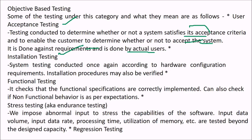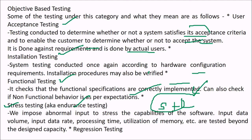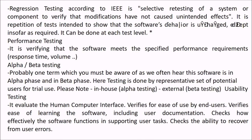Installation testing is system testing conducted according to hardware configuration requirements, verifying installation procedures. Functional testing checks that functional specifications are correctly implemented and verifies non-functional behavior as per expectation. Stress testing, also known as endurance testing, is part of performance testing along with load testing. It imposes abnormal inputs to stress the capabilities of the software — testing input data volume, input data rate, processing time, and memory utilization beyond design capacity. Regression testing, per IEEE, is selective retesting of a system or component to verify that modifications have not caused unintended effects — it is a repetition of tests to show that software behavior is unchanged and can be done at each test level.